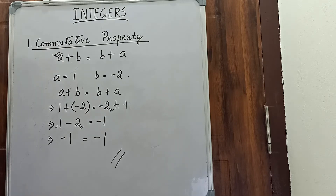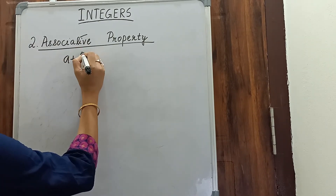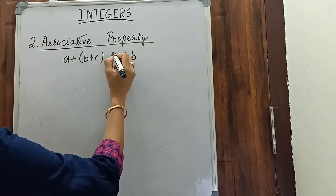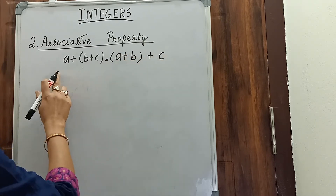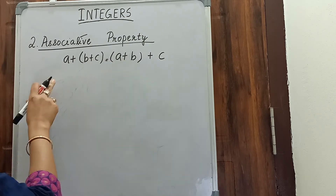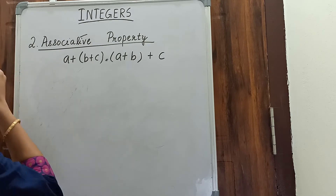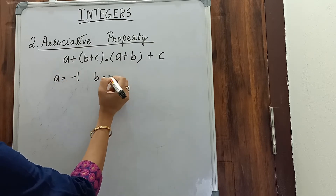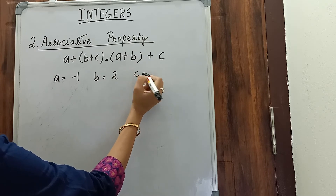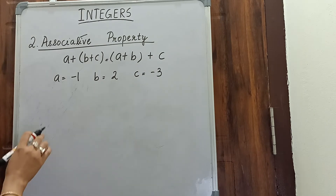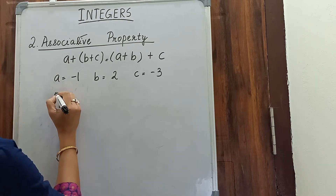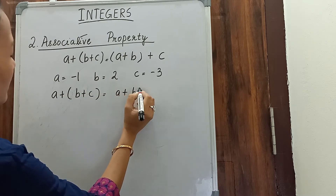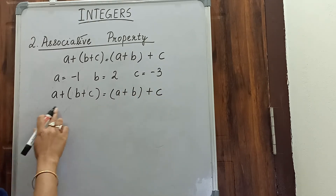The second topic is the associative property. According to the associative property, (a plus b) plus c equals a plus (b plus c). We will solve this by putting integers, taking both negative and positive. We'll assume a as minus 1, b as 2, and c as minus 3. You can take any numbers but include both positive and negative integers.